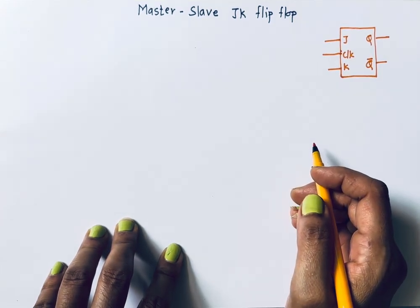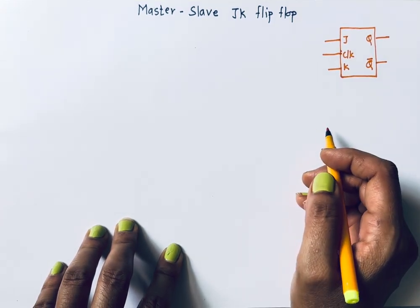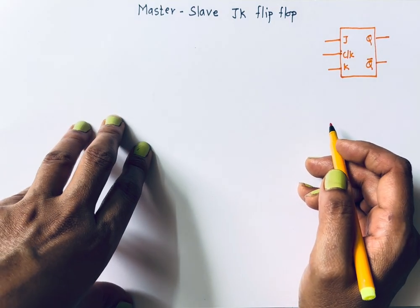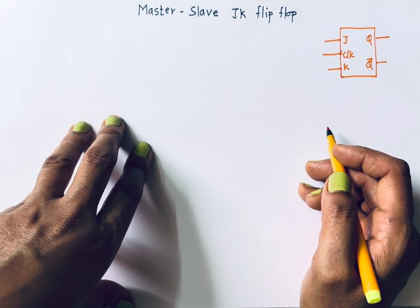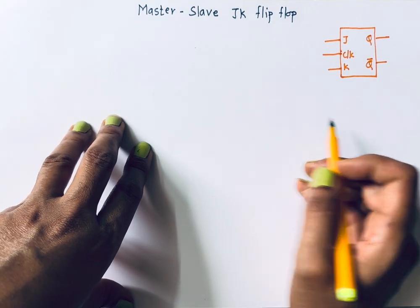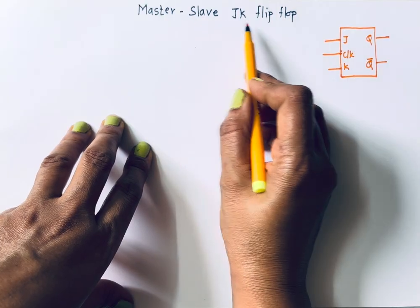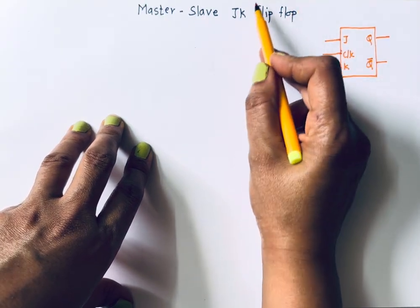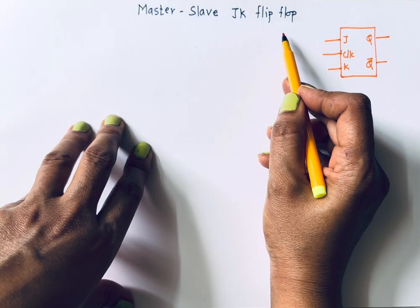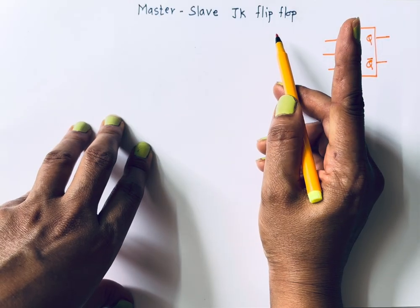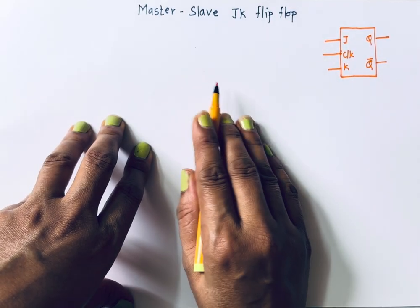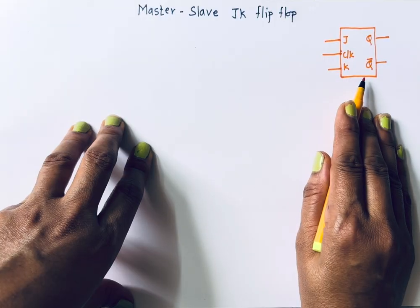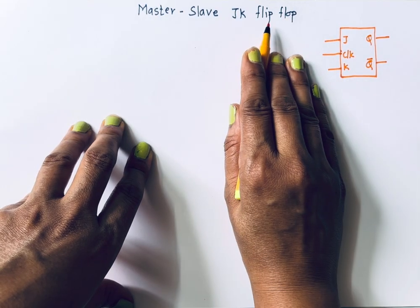Hello everyone, welcome to my channel. You are learning with Dr. Shobhanikam. In this video I'll talk about the most commonly used flip-flop, that is the master-slave JK flip-flop. A flip-flop is basically a one-bit memory cell — it means it can store one bit of data, and that one bit can be zero or it can be one.